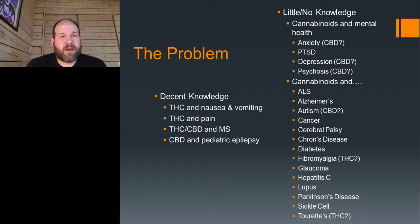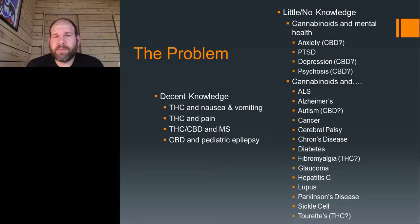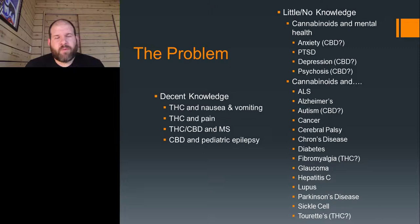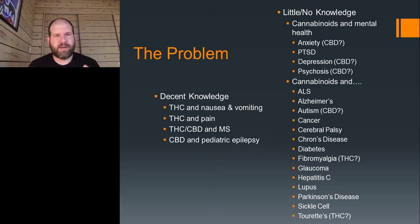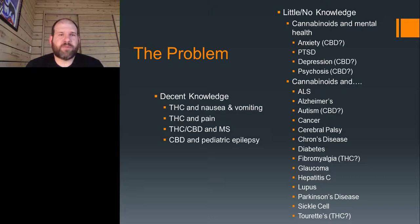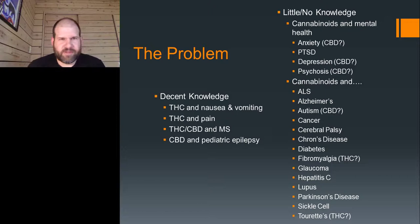Each state creates its own laws and has a list of conditions for which medical cannabis can be used. The problem is there's actually very little research, and most additions to those condition lists are done by lobbying rather than based on research. On the left are conditions we have decent knowledge about — we have randomized double-blind placebo-controlled trials. We know a decent amount about THC and nausea and vomiting, THC and pain, a one-to-one combination of THC and CBD for multiple sclerosis, and CBD for pediatric epilepsy. These are therapeutic formulations that have been shown to work for these indications.